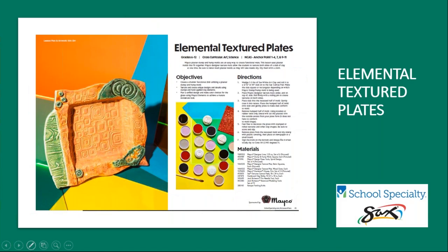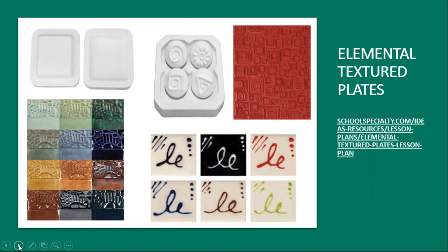Here we have another piece by ceramic artist and educator Eric Orr from Dallas, Texas: elemental textured plates created using Mako products. Plaster slump and hump molds are an easy way to create functional ware, and this lesson uses plaster molds that fit together. Mako designer texture mats allow students to texture both sides of a slab of clay at one time. Main products used are all from Mako and include the slump and hump molds, design press tools, texture mats, elements, glazes, and designer liners.